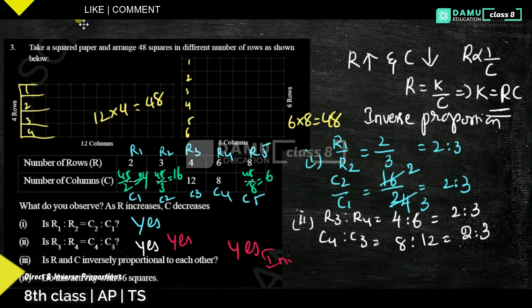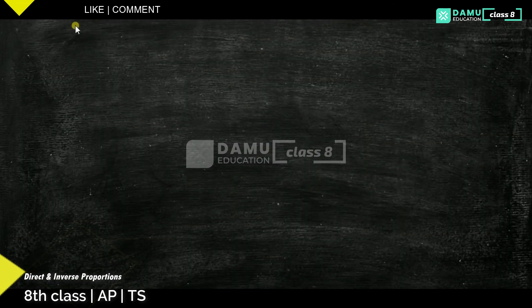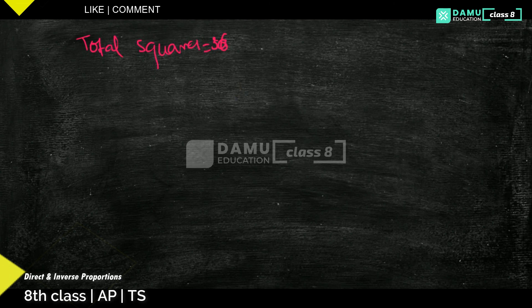Do the activity with 36 squares. So actually, 36 total squares — total squares will be equal to 36.